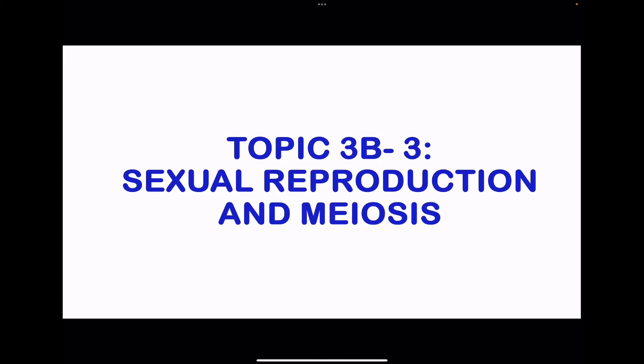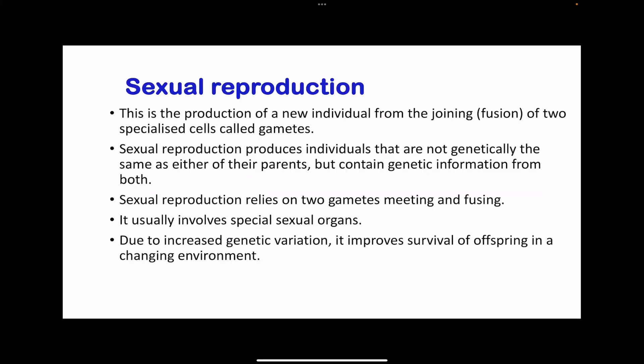Moving on to topic 3b3: sexual reproduction and meiosis. During sexual reproduction, offspring are produced by the fusion of specific gametes. Sexual reproduction produces offspring that are not genetically identical to their parents, because the gametes are produced from meiosis. Sexual reproduction usually involves special sexual organs, both in plants and animals, and is believed to increase genetic variation, improving survival of offspring if environmental conditions change.